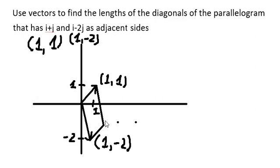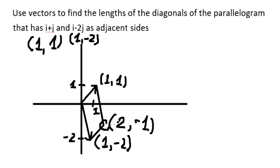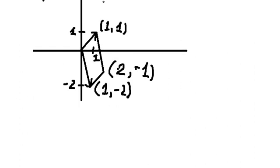this location in here is about (2, -1). Because we just add this location to this one through this vector in here — that's why we have (2, -1). And now we can find the length of the two diagonals in here.